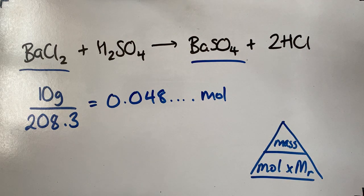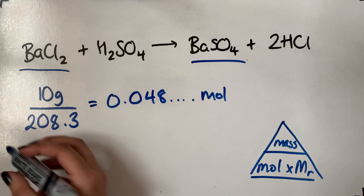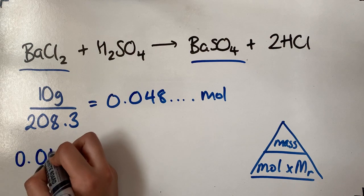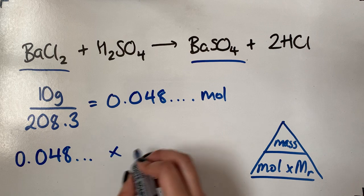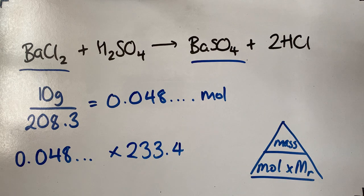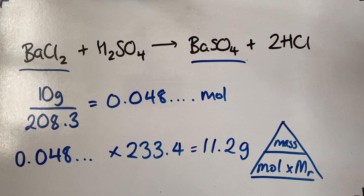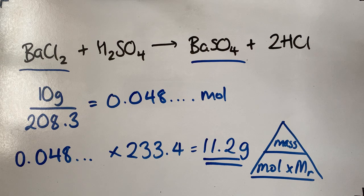So this is the moles of both barium chloride and barium sulphate. We've got the moles of barium sulphate now. All we do is multiply it by the molar mass of barium sulphate to work out the mass. So you do 0.048 multiplied by the molar mass of barium sulphate, which is 233.4. That gives us an answer of 11.2 — rounding that to three significant figures. So this is the mass of barium sulphate produced from 10 grams of barium chloride. The key thing is always convert everything to moles first, and then apply that to the balanced equation.